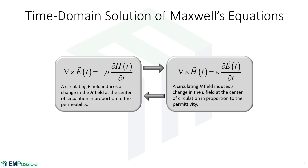At first we initialize everything to zero, so we're bouncing back and forth E-H and nothing's happening — that's the heartbeat of finite difference time domain. Then somewhere in our simulation we toss some numbers in, maybe to a single point or two adjacent points. As we throw those numbers in, we watch them trickle across the grid. What we're actually watching is waves propagating across the grid and interacting with our devices, and we can learn everything we need to know about the device. That's finite difference time domain.